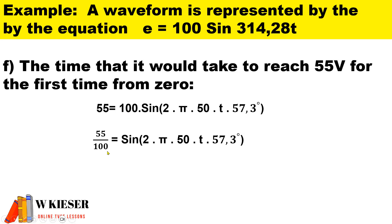We have 55 over 100, and we have everything in our bracket left behind. So therefore, time will be equal to sin⁻¹(55/100) divided by 2π × 50 × 57.3. This will give us a time of 1.85 milliseconds.